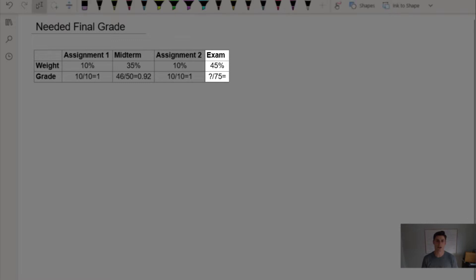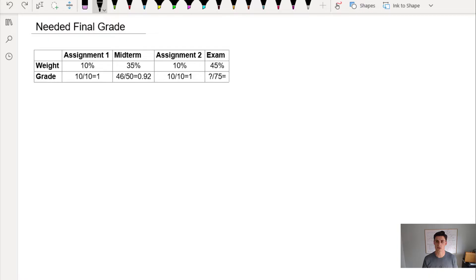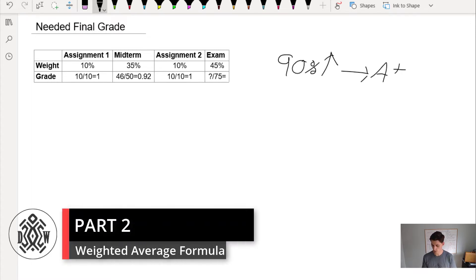The question I ask myself is how many questions do I need to get an A plus? Given my current grades of 100 and 92, it's pretty attainable. At Carleton University an A plus is 90 percent and above.